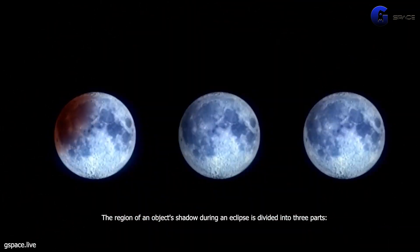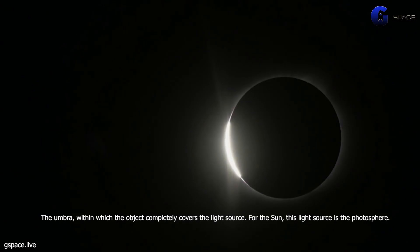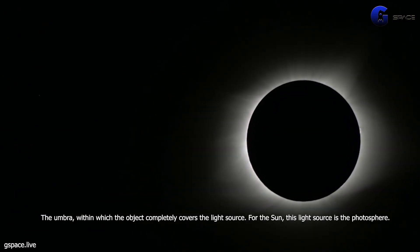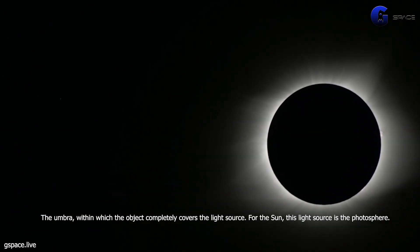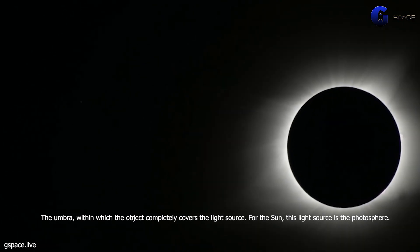The region of an object's shadow during an eclipse is divided into three parts. The umbra, within which the object completely covers the light source. For the sun, this light source is the photosphere.